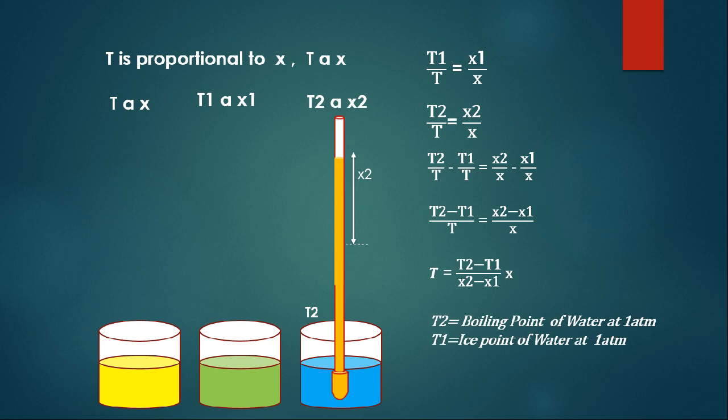This means I take a fluid in a beaker, boil it under atmospheric conditions, and dip the thermometer in that boiling liquid. At that point I fix the temperature as 100 degrees Celsius. So T2 is taken as 100 degrees Celsius and I can measure the expansion, calling it X2.